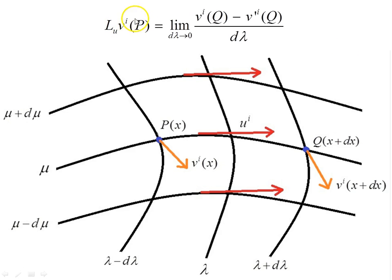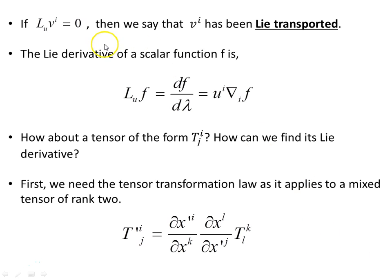The Lie derivative of v with respect to vector field u gives us the change in the vector v at point q evaluated using its value at point p. It is almost as though the whole manifold is being slipped along the congruence curve from point p to point q — or equivalently, point q is being slipped back to point p — to evaluate the change. If the Lie derivative of v with respect to u is zero, we say that v has been Lie transported, a similar process to parallel transport. The Lie derivative of a scalar function f, which is a tensor of rank 0, is simply u i times the covariant derivative of f.